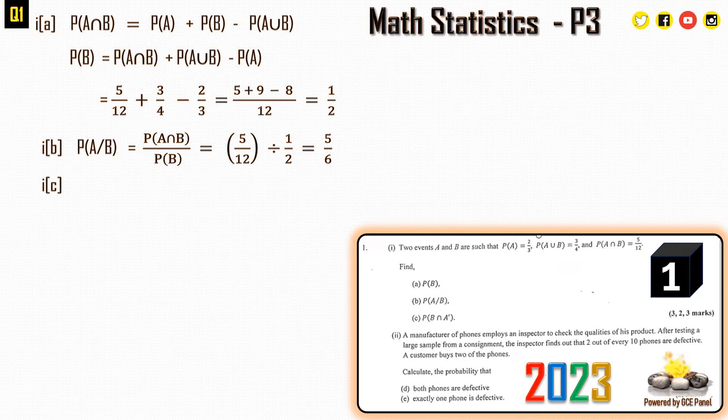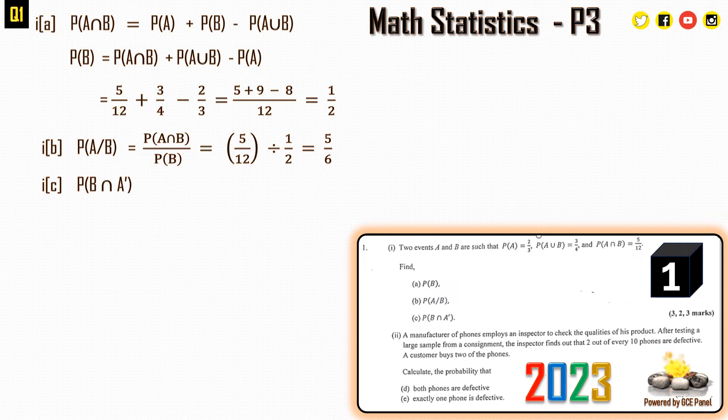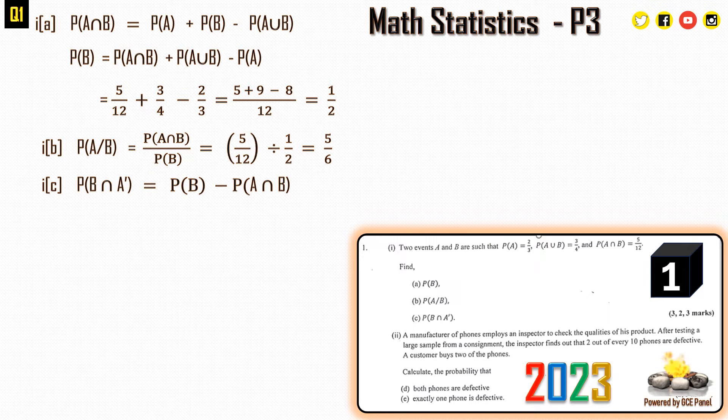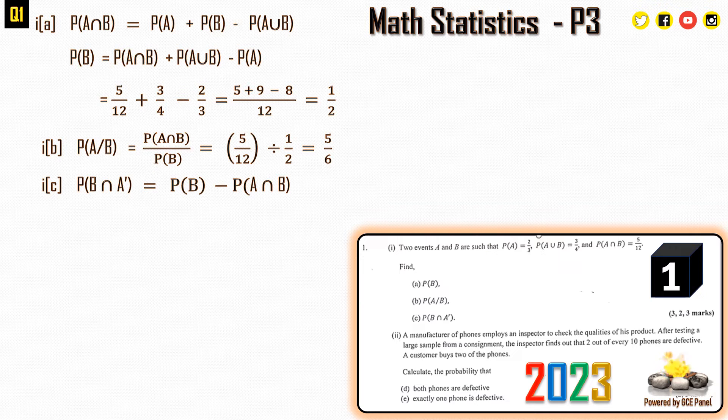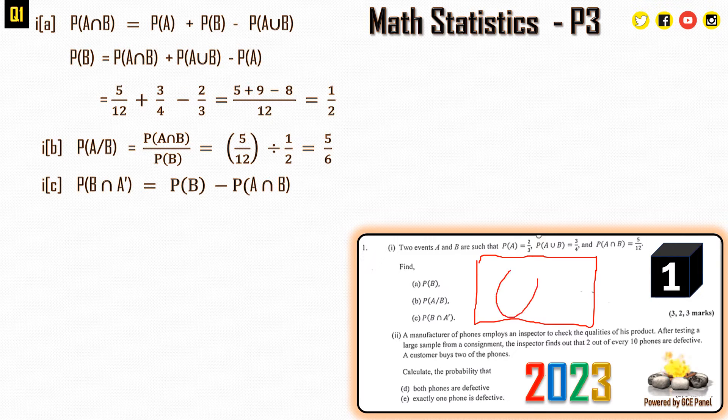The c part of sub 1 reads: find the probability of B intersection A prime. Here we can obtain the probability of B intersection A prime as follows. If you have to sketch this out using a small sketch down here, we will have this box where we have the probability of A and the probability of B. The probability of B intersection A prime can be given as the probability of B minus the probability of A intersection B.